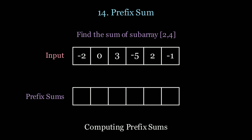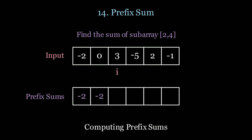Imagine I want to find the sum of subarrays 2 to 4, 1 to 5, 0 to 3, etc. — multiple queries. In this case we calculate a prefix sums table and then use it to find the sum of subarrays in constant time.